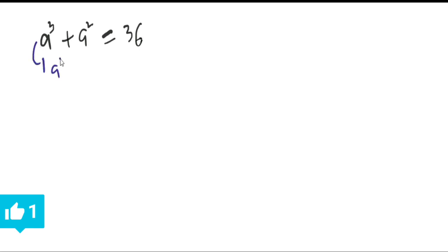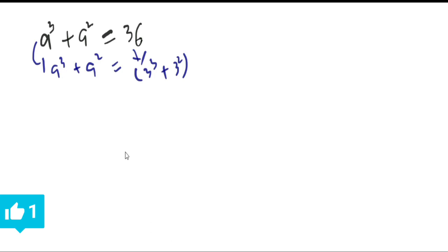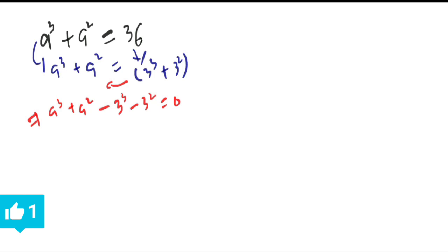We can write this as a³ + a² = 36, which can be written as 3³ + 3². Now we shift these terms to the left-hand side, so a³ + a² minus 3³ minus 3² is equal to 0.